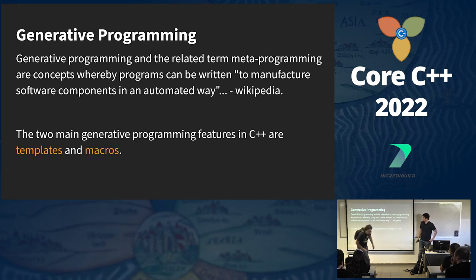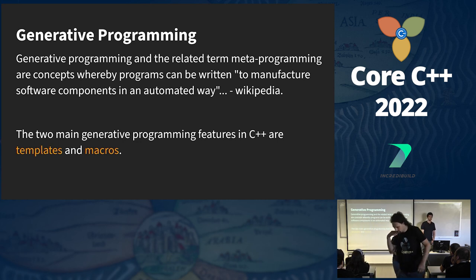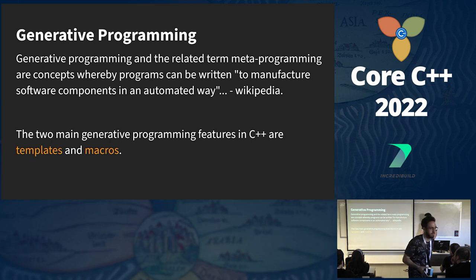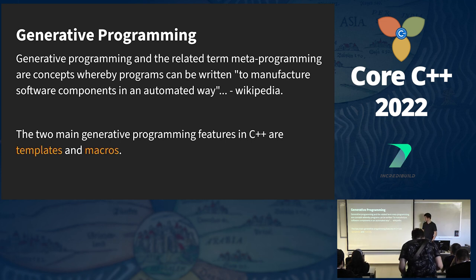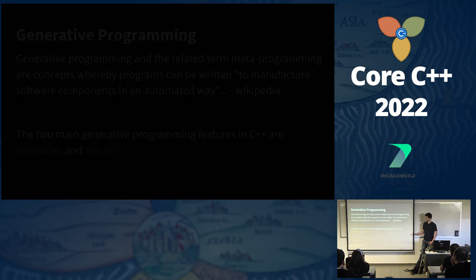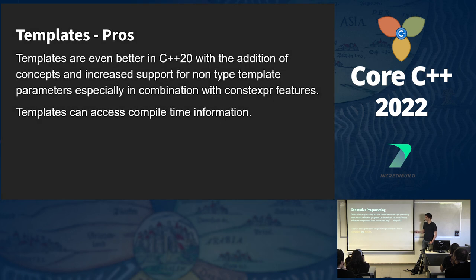Generative programming — in short, it's when you have a software component that can generate other software components. In C++ it applies to two features: templates and macros. We can use a template to generate many variations of a class or a function, and we can do the same thing with macros.